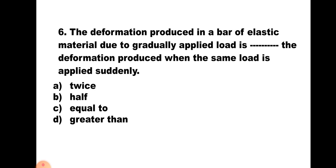Question number 6: The deformation produced in a bar of elastic material due to a gradually applied load is __ the deformation produced when the same load is applied suddenly. A. Twice, B. Half, C. Equal to, D. Greater than. Just like the previous question, the deformation due to sudden load is twice that due to gradually applied load. But notice the wording — here it asks about gradually applied load compared to suddenly applied load. So the answer is half. The correct answer is B. Half.